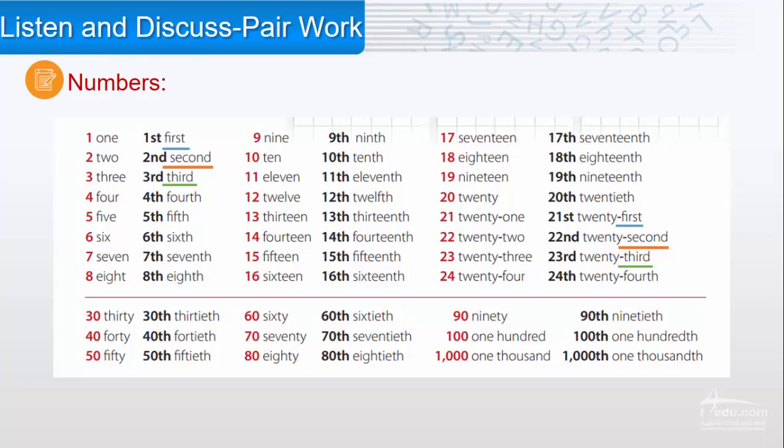Here we have the numbers one, two, three, four, five, and here we have the ordinals: first, second, third. These are different. One is first, two is second, three is third.